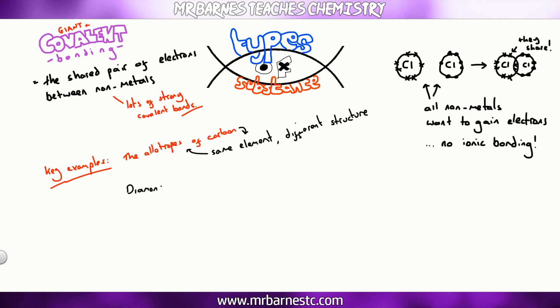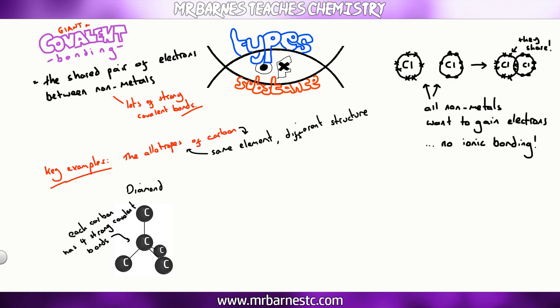Starting with diamond, you can see here every carbon has four strong covalent bonds. This makes it really, really strong, so it's used in cutting tools.